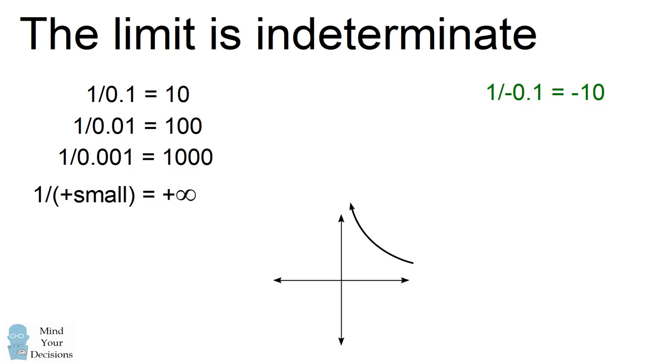If you did the operation from negative numbers, as you got smaller and smaller and closer to zero, you'd get one divided by these numbers is negative infinity and the graph goes the other way.